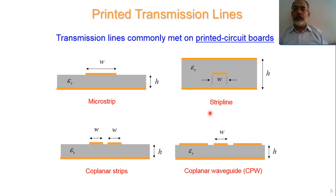Stripline was introduced as a replacement for coaxial transmission line, and it can be fabricated using a printed circuit approach, which gives a simpler fabrication process. In addition, we can add components inside the circuit by cutting the line at certain points and adding components.